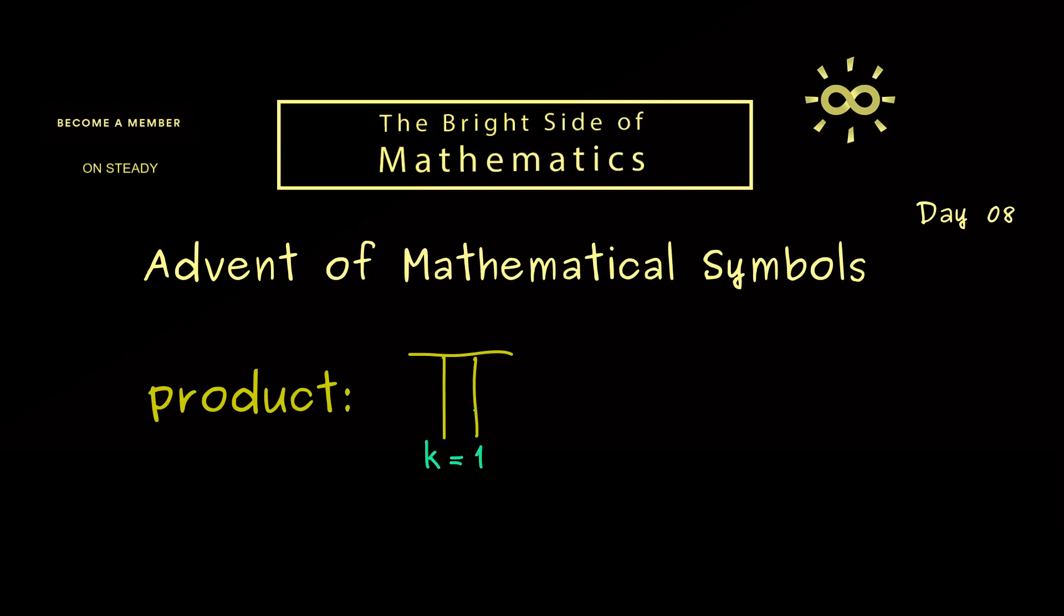So here k starts with the value 1, goes through all natural numbers until we reach the value n in the end. Hence this symbol here is a short notation for a product with exactly n factors. More precisely, we start with a1 times a2 times a3 and so on until we reach a n.